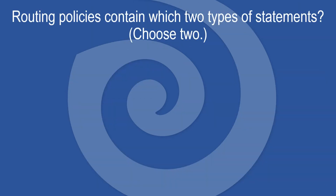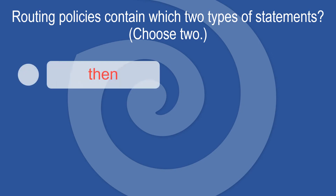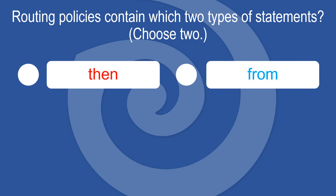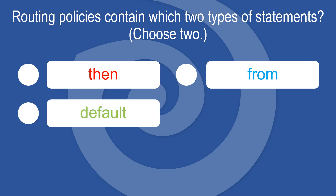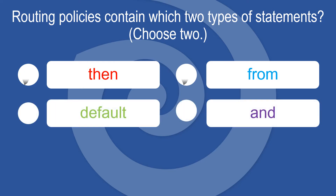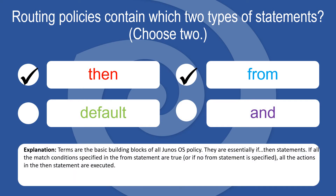Routing policies contain which two types of statements? Choose two: then, from, default, and. Terms are the basic building blocks of all Junos OS policy — essentially if-then statements. If all the match conditions in the FROM statement are true, or if no FROM statement is specified, all the actions in the THEN statement are executed.